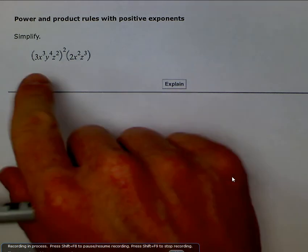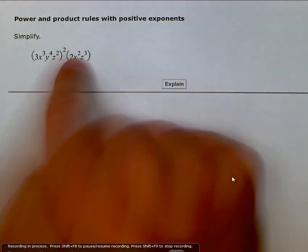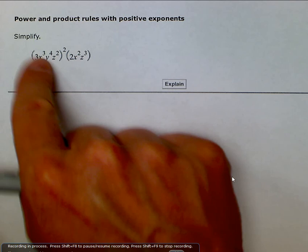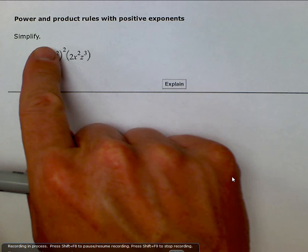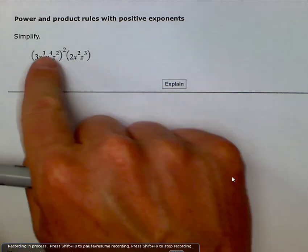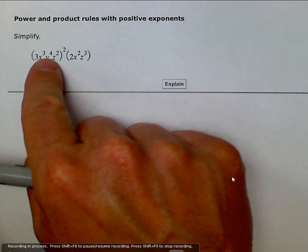We notice this is a product of two parts. If everything here in parentheses was x and everything in here in parentheses was y, we would just have x squared times y. But we have all of this inside of the parentheses that needs to get raised to the second power.